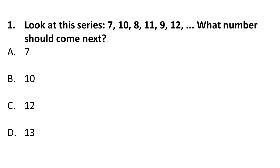From the second to third number it goes down by two, then from third to fourth it goes up by three, fourth to fifth down by two, fifth to sixth up by three. So it should come down again after 12 — it should come down by two. The next number will be 10. I hope you got your answer right.